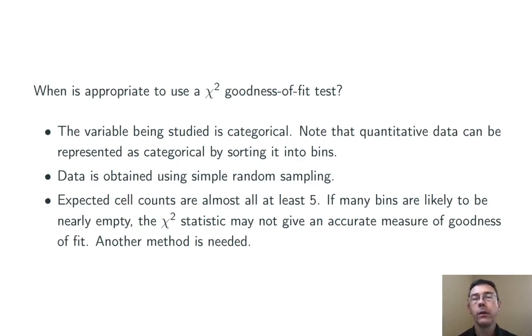Finally, and most notable, your expected cell counts should be at least five. At least most of them should be. If many bins are likely to be nearly empty, then the chi-squared test statistic is not going to give you, or is less likely to give you, an accurate measure of goodness-of-fit.